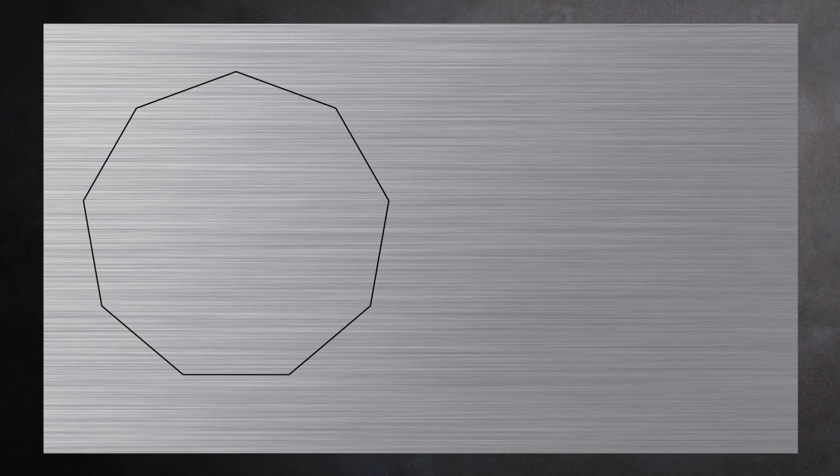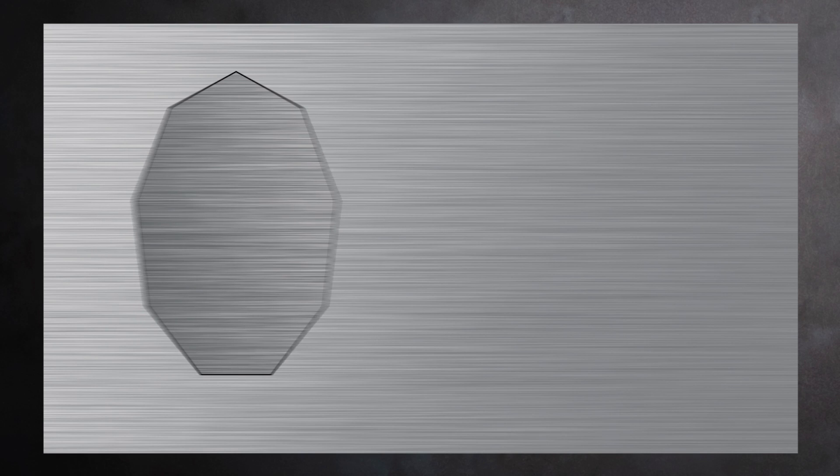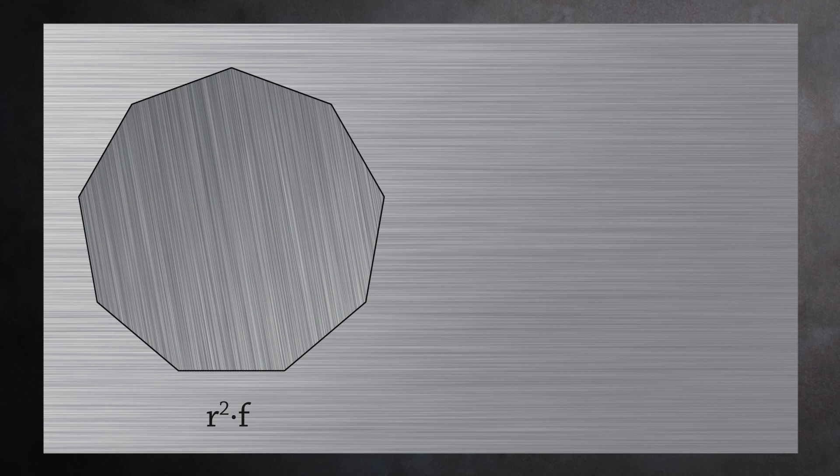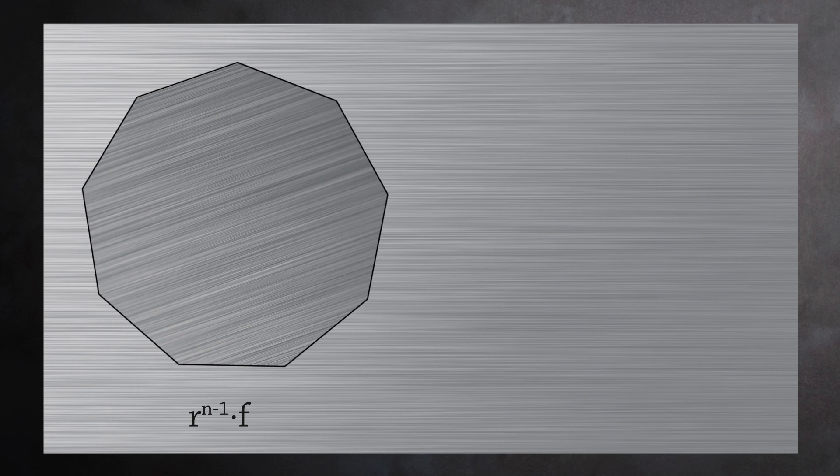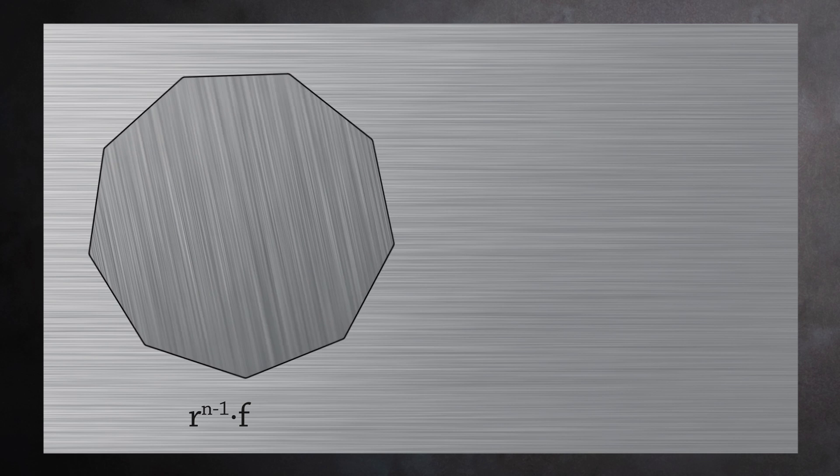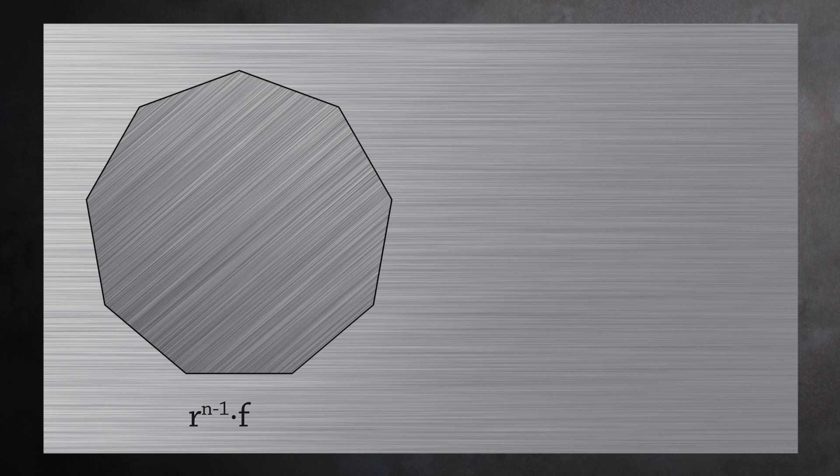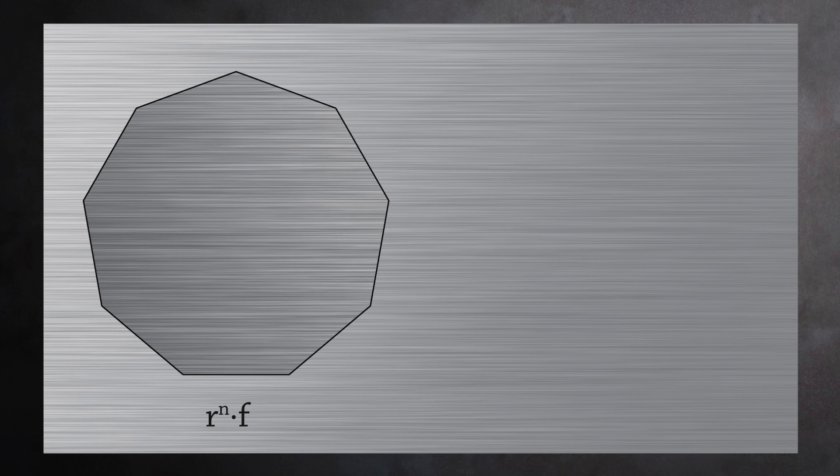The remaining symmetries of this shape can be found by combining R and F. If you first flip the shape, you can then perform up to n minus 1 rotations to get the remaining symmetries. If you perform n rotations after a flip, you get the same result as just a flip.